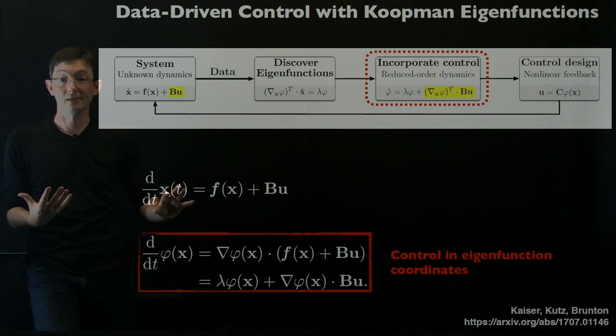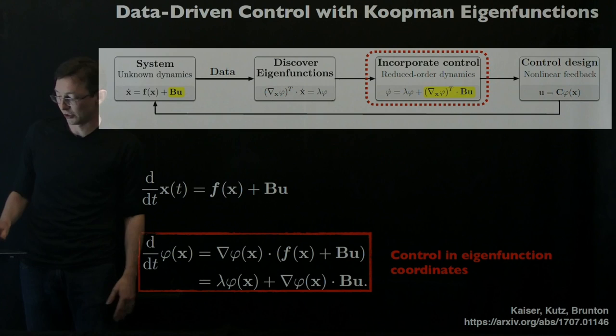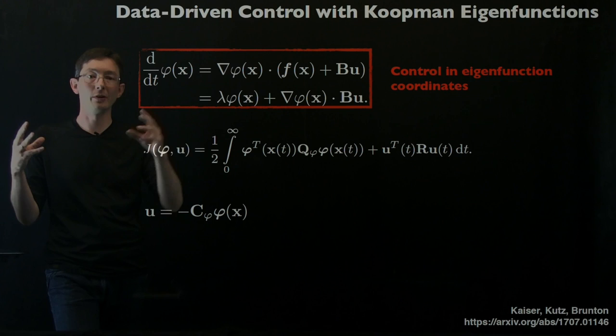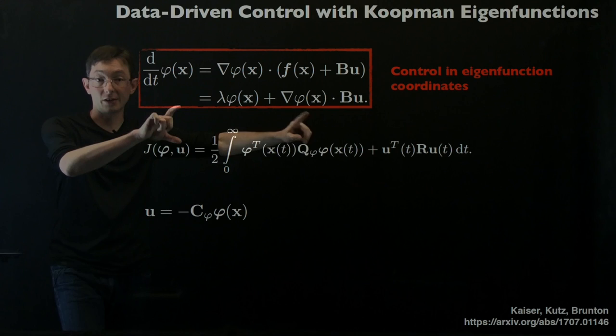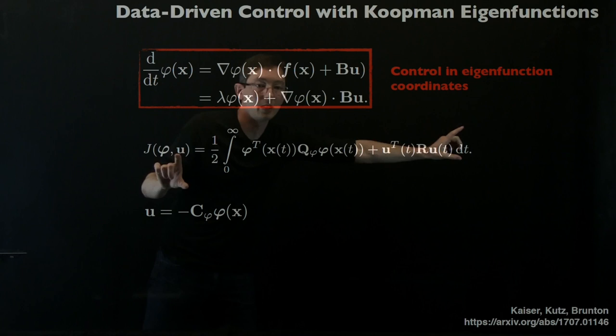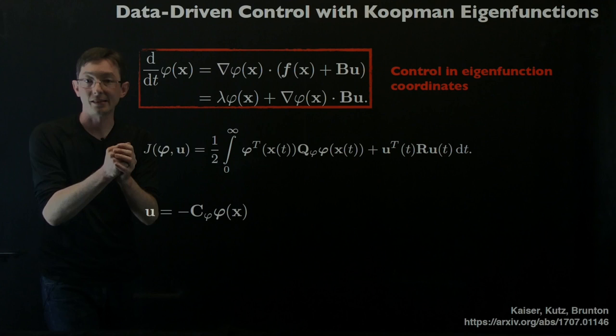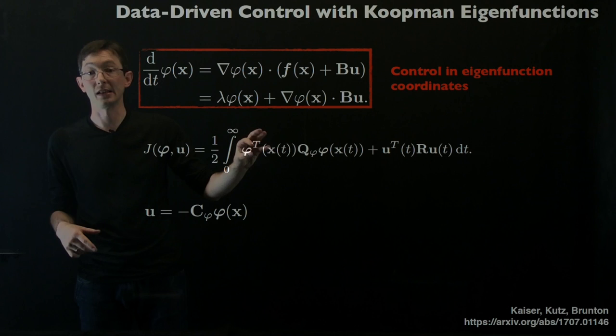We've seen before that we can find these phi functions, these eigenfunctions of the unforced system, using this kind of sparse identification. We find the fewest terms in a library that give phi. So we can discover these from data. We write them down with this extra controller here. What Eureka showed is that you can essentially use the same quadratic cost function, the same kind of LQR cost function, but now we can represent our cost in terms of these eigenfunctions directly. Instead of trying to move the state x to the origin or to some reference value, we're directly going to steer the eigenfunctions themselves.